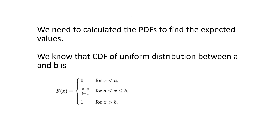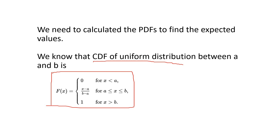The standard approach is to first find the CDF and then differentiate to get the PDF. The CDF of a uniform distribution between 0 and 1 is F(x) = x for x between 0 and 1, and F(x) = 1 for x greater than 1.